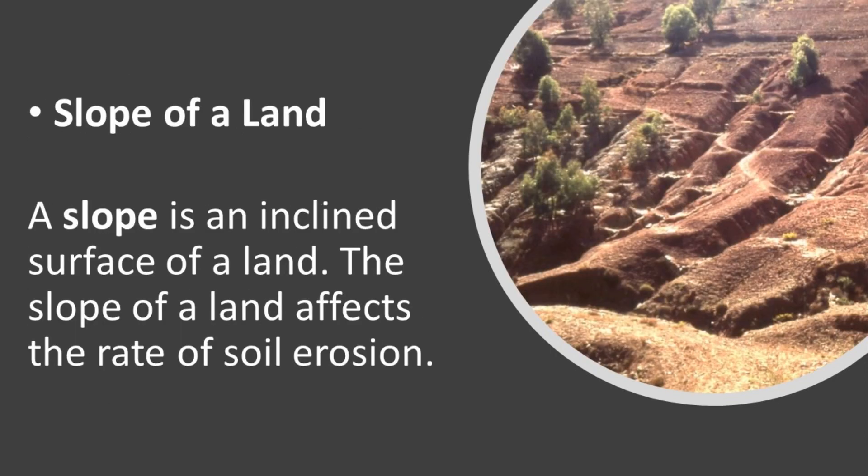Slope of a land: A slope is an inclined surface of a land. The slope of a land affects the rate of soil erosion.